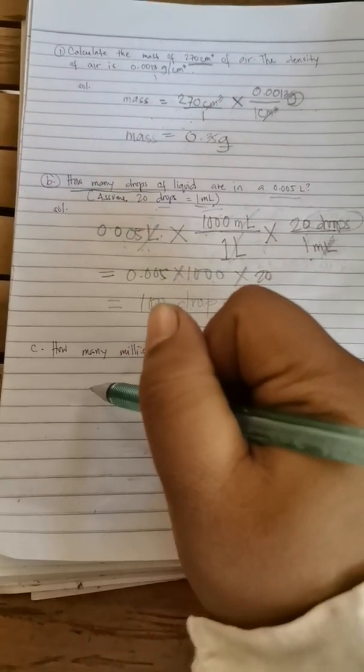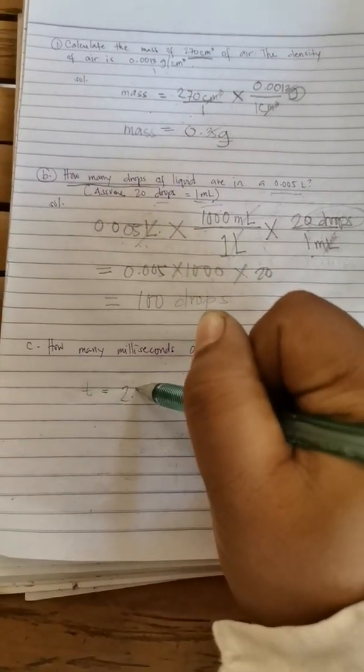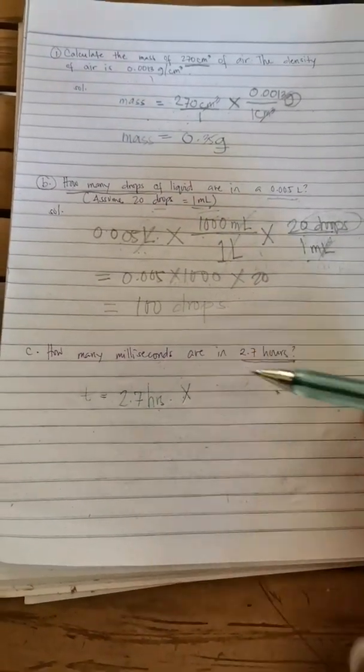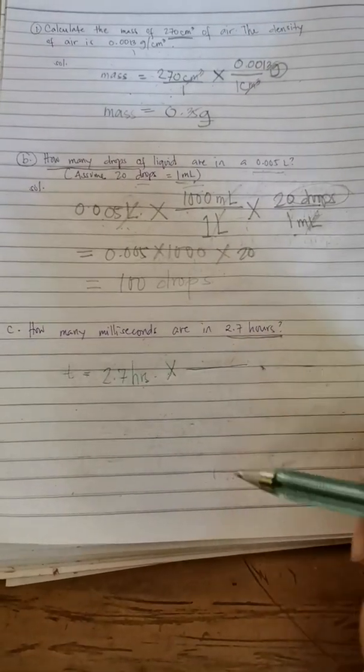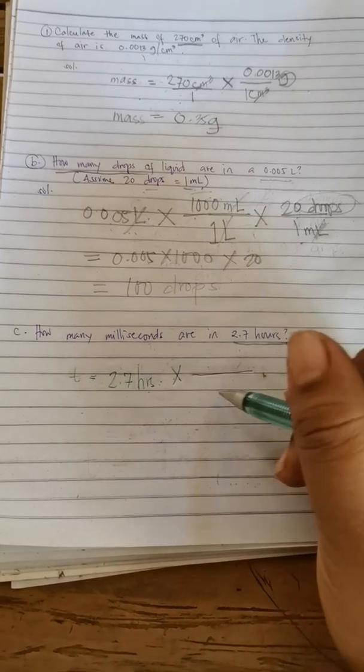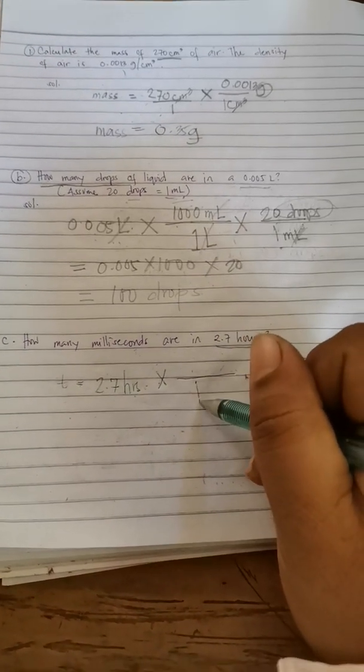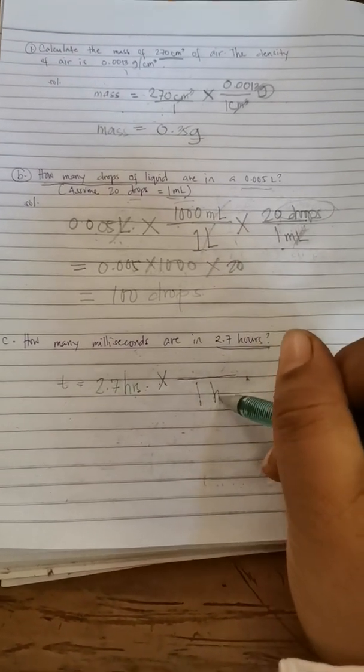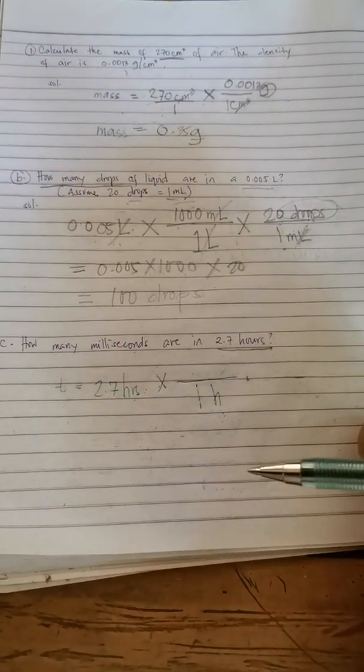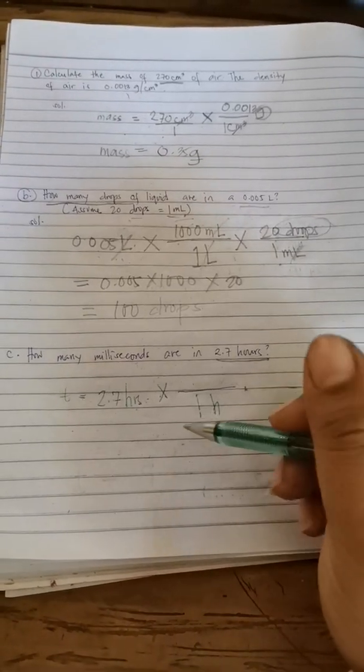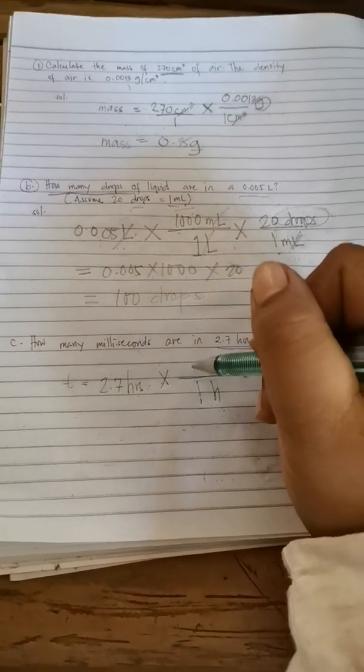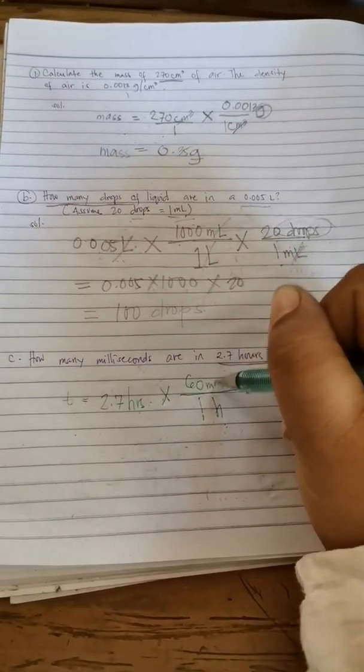So first, we have to write 2.7 hours times what will be in our denominator. Our goal is milliseconds. So first, we have to eliminate hours. So to eliminate that, we have to put hour in our denominator. In 1 hour, milliseconds already? No. We have to first, one step at a time. So in 1 hour, how many minutes? We have 60 minutes.